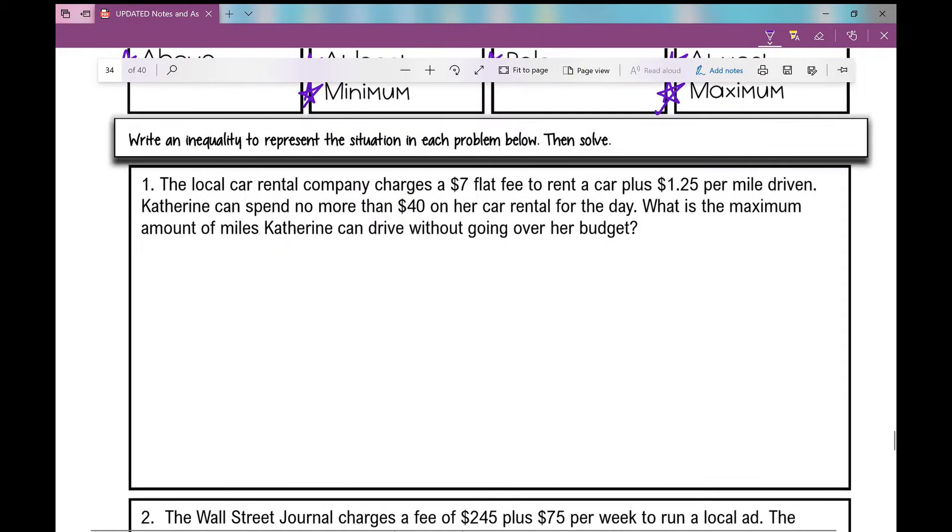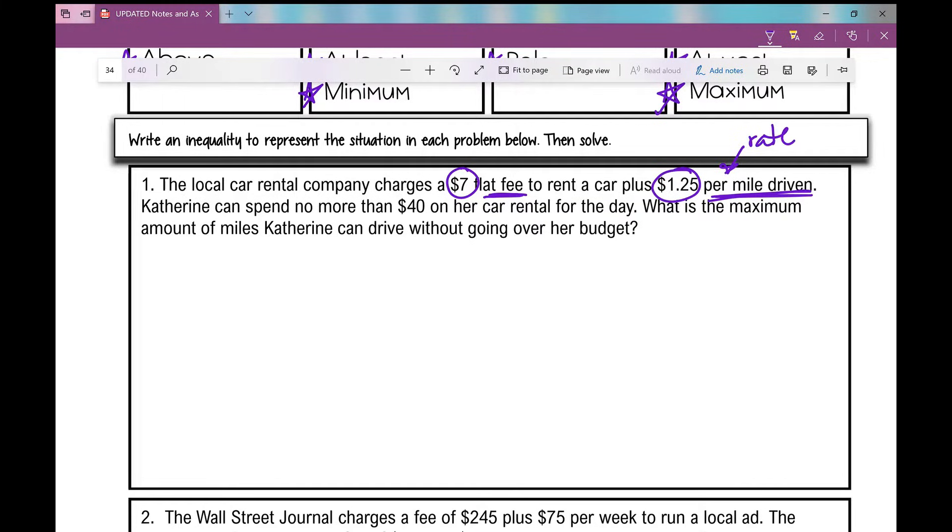Number one. The local car rental company charges a $7 flat fee to rent a car plus $1.25 per mile driven. Per mile, that's a rate. And per mile means that right there is what X would equal. If it's a rate, this is the number that goes in front of the variable, $1.25 per mile. So $1.25 times X, X would represent the number of miles. But let's keep going. Catherine can spend no more than $40 on her car rental for the day. What is the maximum amount of miles Catherine can drive without going over her budget?